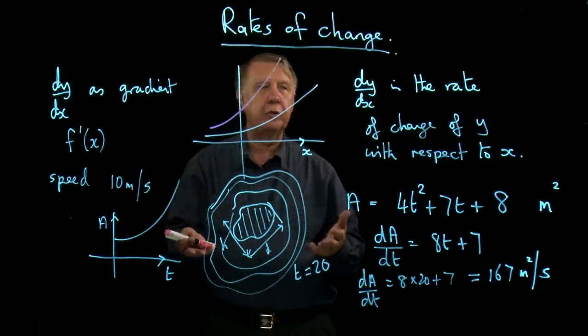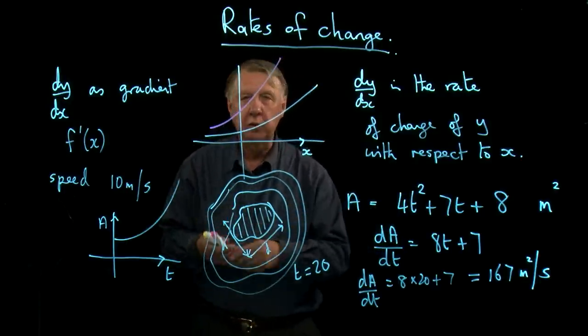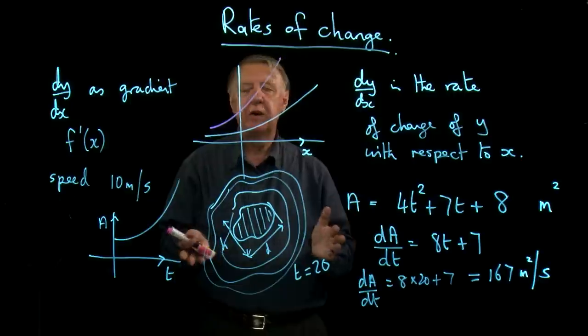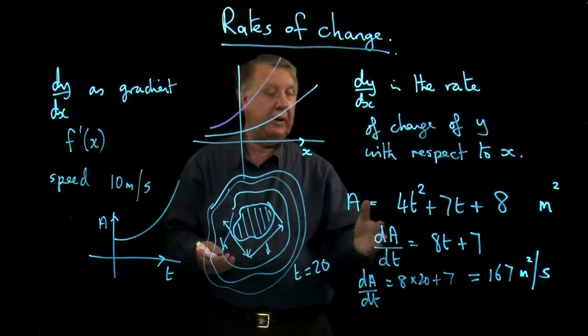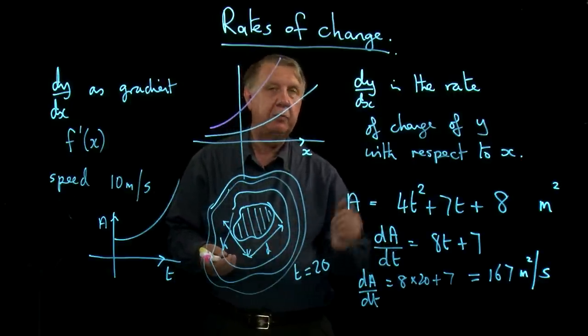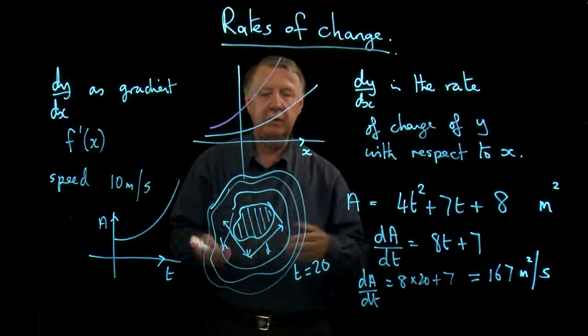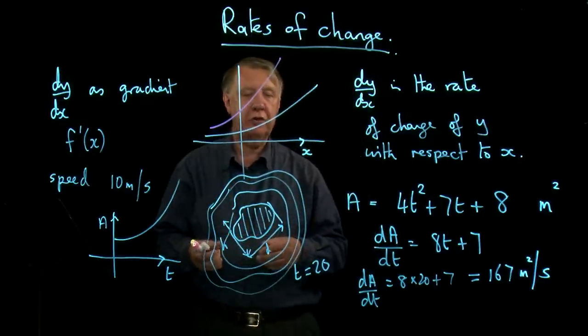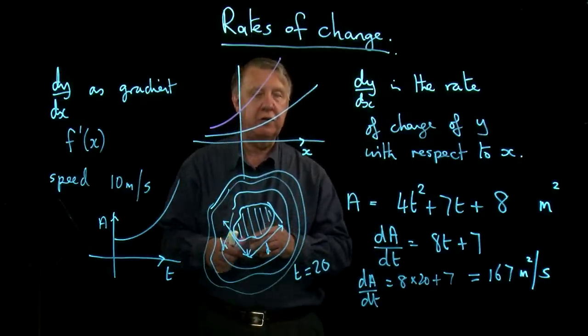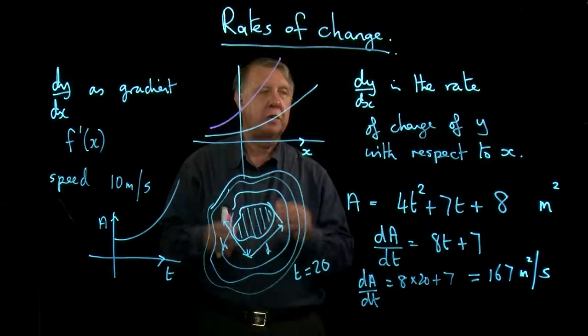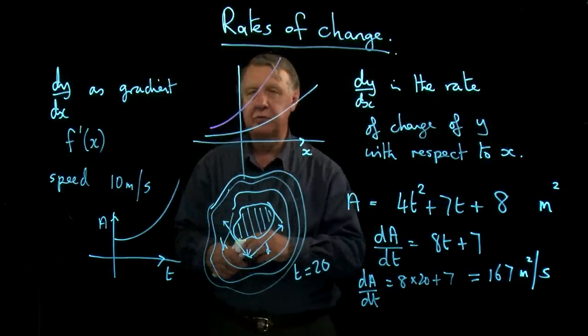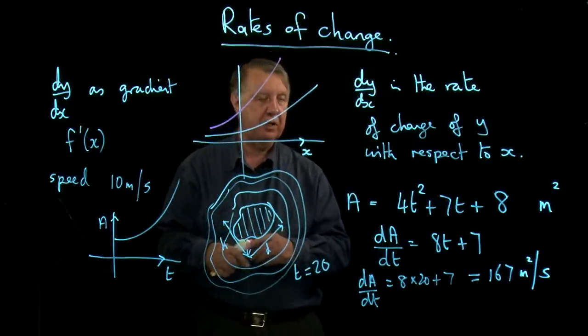So the thing to watch out for is, is there time in the question? If there is, you're likely to be doing a something by dt and evaluating a rate at which something is changing. So I'm sure in our work we've come across lots more examples of this type of thing.